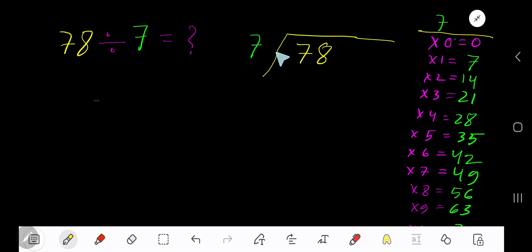78 divided by 7. Here 7 is a divisor, so we need the multiplication table of 7.